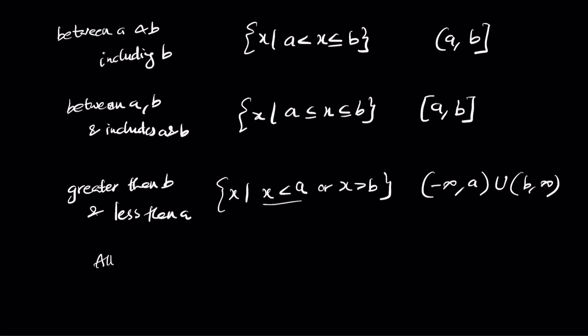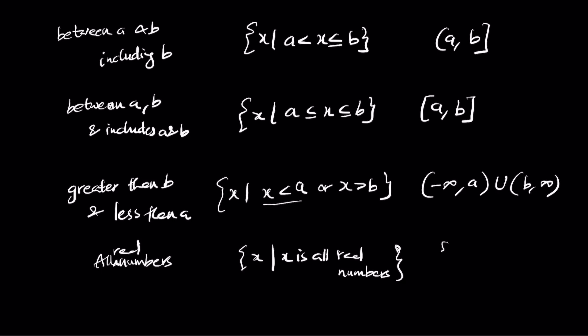For all real numbers, it's represented as x such that x is all real numbers. In interval notation, it becomes open interval negative infinity comma infinity. These are the common ways to denote interval notation.